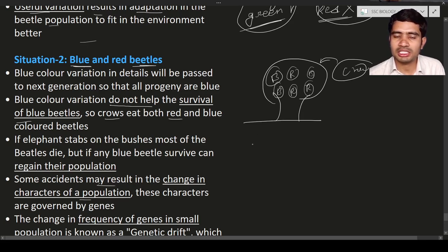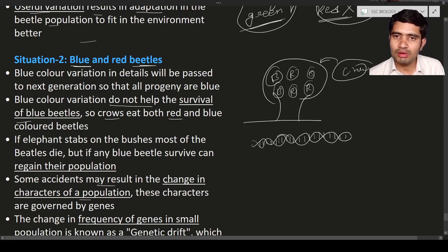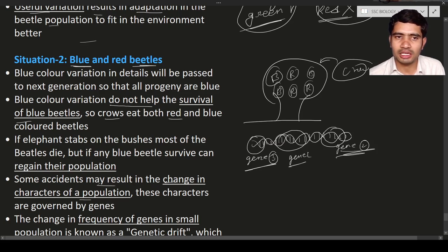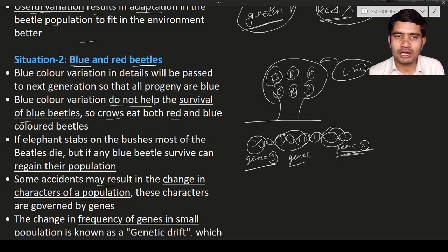What are genes? Genes are nothing but a segment of the DNA. In the DNA there are small segments — a small piece. These small pieces, this small segment and so on, are known as genes. For example, gene 1, gene 2, gene 3, and so on. These are the genes present in the DNA. Some accidents may result in a change in the characters of a population, and these characters are governed — meaning controlled — by the genes.